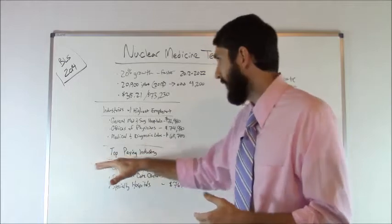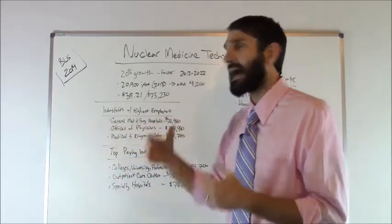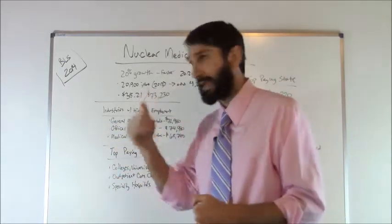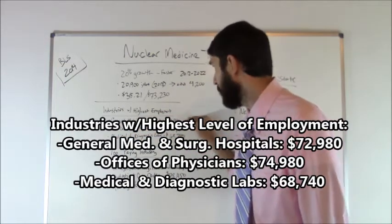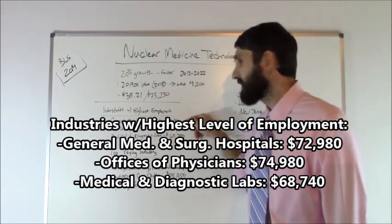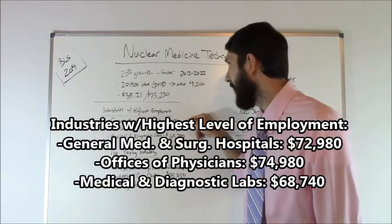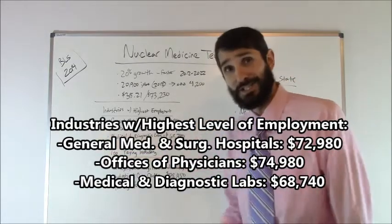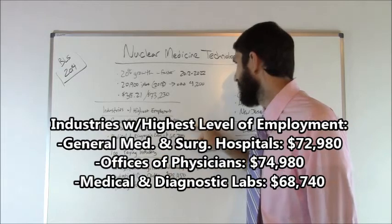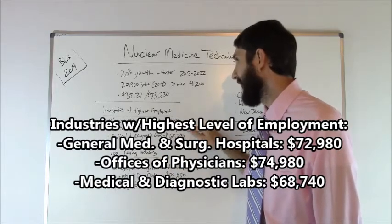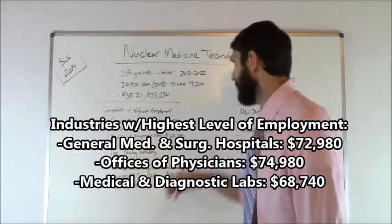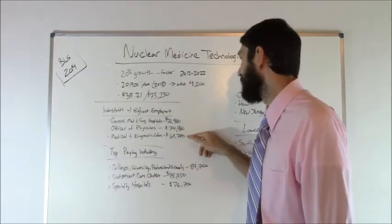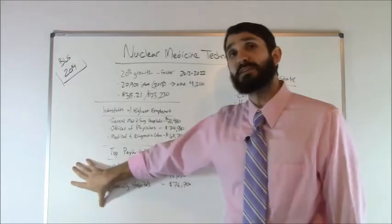What industries had the highest level of employment for nuke med techs? Well, general medical and surgical hospitals came in at number one, the average salary there $72,980. Offices of physicians came in at number two, the average there $74,980. And then medical and diagnostic laboratories number three, $68,740.